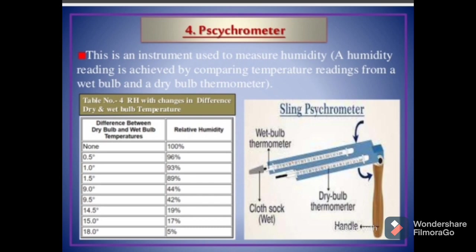Psychrometer is an instrument used to measure humidity. A humidity reading is achieved by comparing temperature readings from a wet bulb and a dry bulb thermometer. As shown in the illustration using a sling psychrometer having two thermometers — the wet bulb thermometer and the dry bulb thermometer — we can achieve the relative humidity by comparing these two. Table number four shows relative humidity with changes in difference between dry and wet bulb temperature.